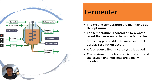Temperature is controlled by a water jacket surrounding the fermenter, using cold water, because the Fusarium will respire and release heat. Sterile oxygen is added to ensure aerobic respiration can occur. Everything is mixed using stirring paddles to ensure oxygen and nutrients are equally distributed. At the end of the process, the mycoprotein can be removed from the bottom of the fermenter.